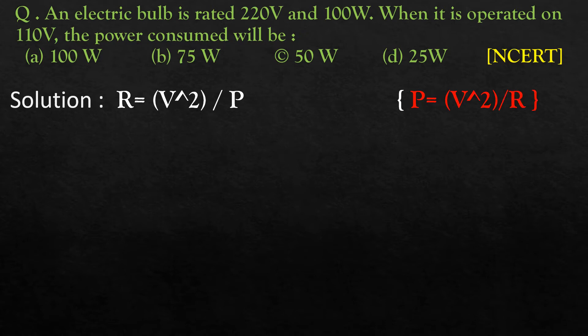P is equal to V squared by R. We can rearrange this formula to get R is equal to V squared by P. We'll use this formula now.